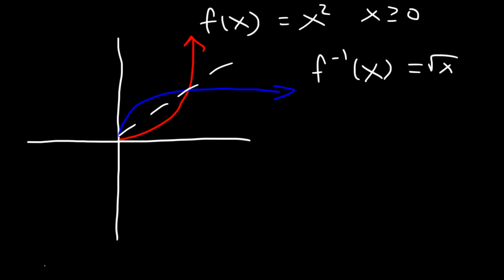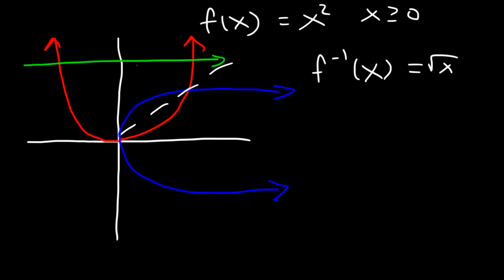Now let's draw the entire function y equals x squared, not just the right side. The inverse of that entire graph does not pass the horizontal line test — it touches it at two points, meaning it's no longer one-to-one. Therefore, the inverse will not pass the vertical line test, meaning the inverse function is not a function. You can use the horizontal line test on f of x to determine if its inverse will be a function.